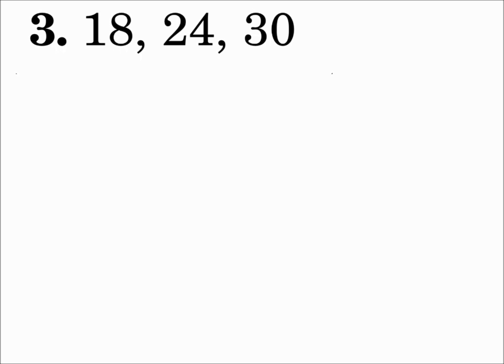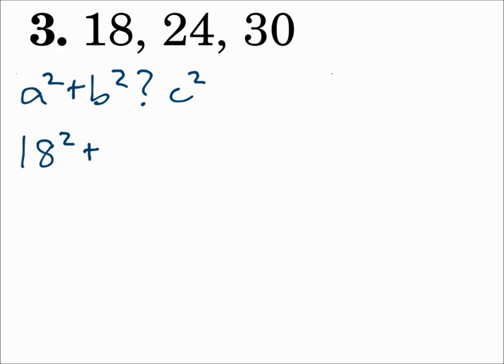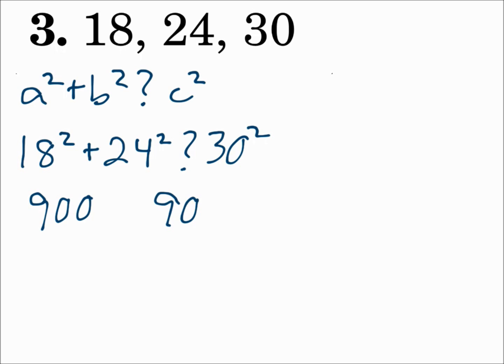Number 3: 18, 24, and 30. Is it a triangle? Is 18 plus 24 greater than 30? Yes, it is. Now what type of triangle is it? Compare a squared plus b squared to c squared. Remember, c is the biggest number. So 18 squared plus 24 squared — how does it compare to 30 squared? We get 900 and 900, those are equal. And when a squared plus b squared equals c squared, that's a right triangle.